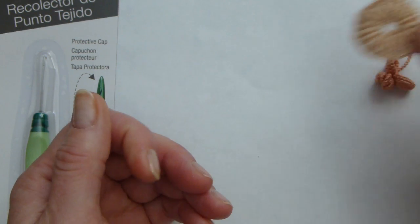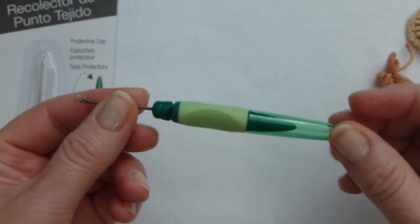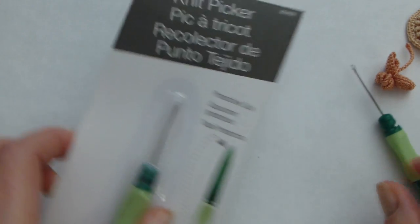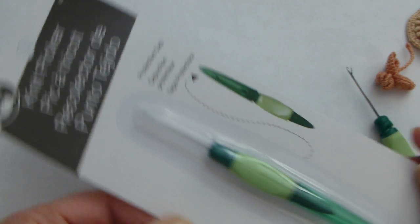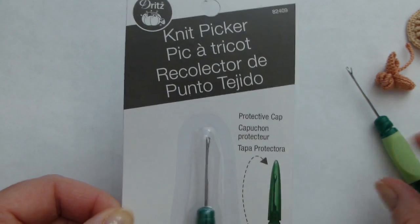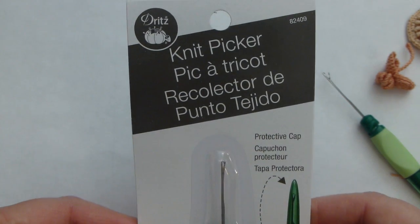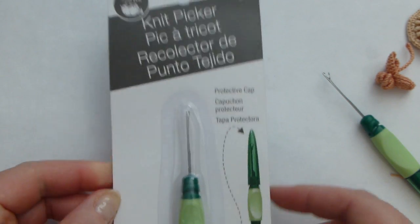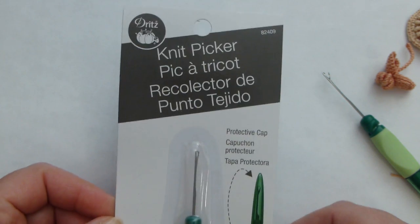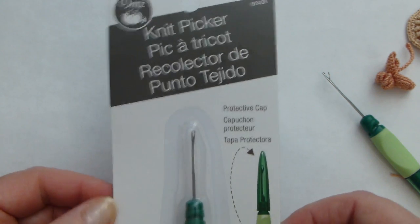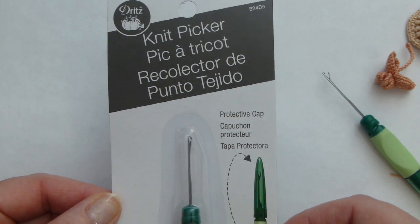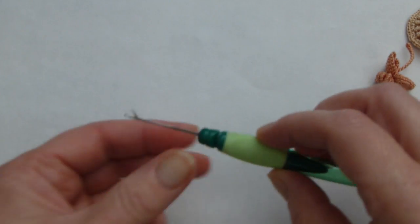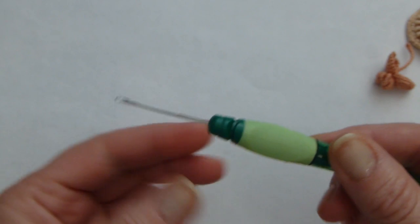Just recently I found this hook at Joanne. It's a knit picker. Here it is. I bought another one just in case I will break this one. You can purchase it, it's a little bit more than six dollars. If you have coupons it will be even cheaper. You can look for this in the aisle where they have sewing equipment for sewing, not crochet.